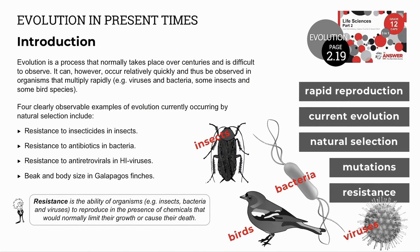We've already looked at evolution as a process that occurs over long periods of time — it's difficult to observe as scientists often rely on observations in history. Rapid reproduction in some modern species, however, shows current evolution with natural selection over shorter periods of time. These are all examples of microevolution, in other words, evolution within a species.